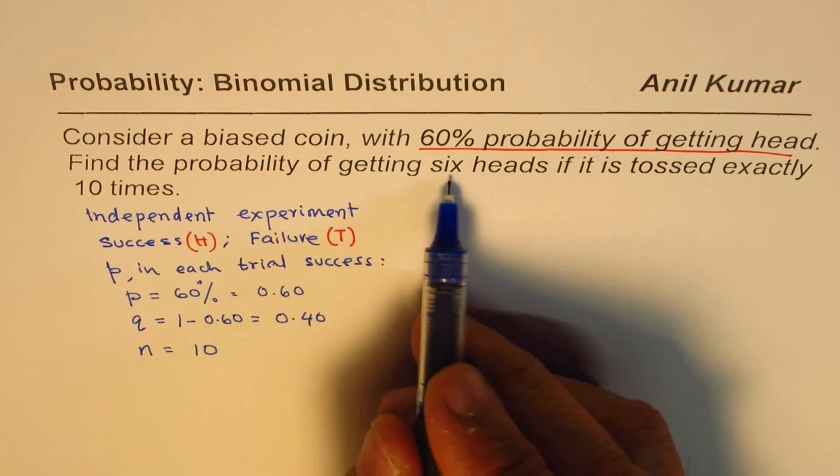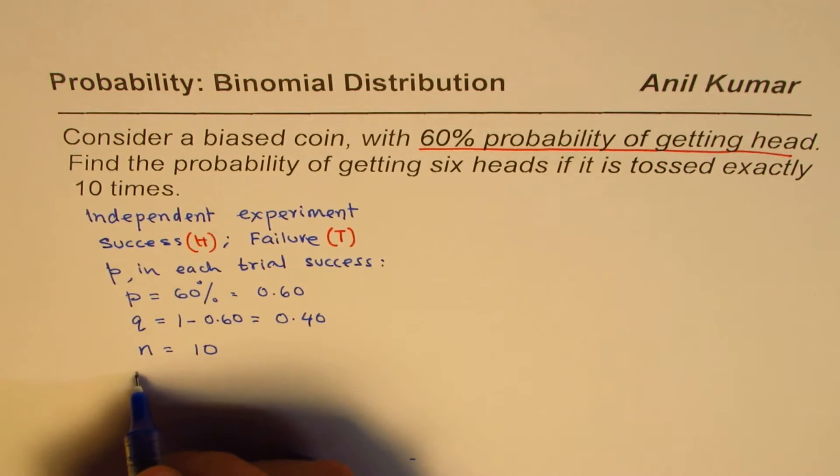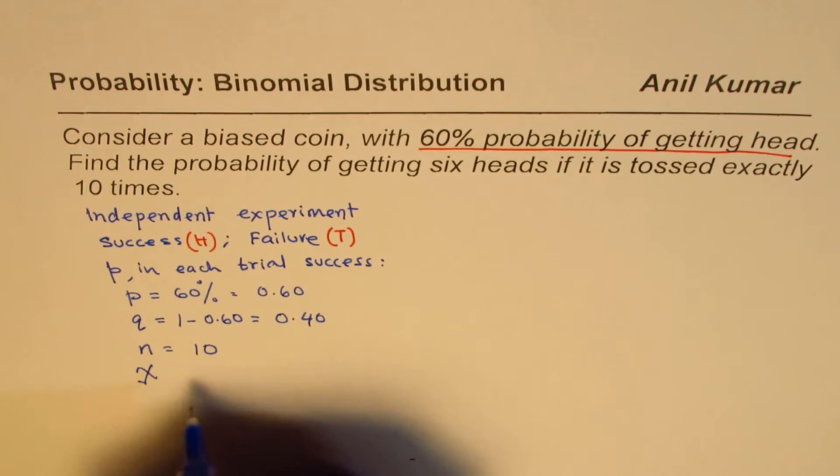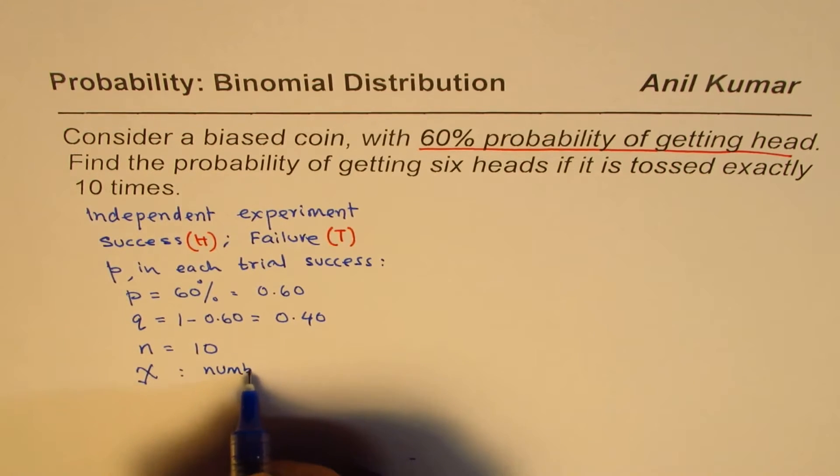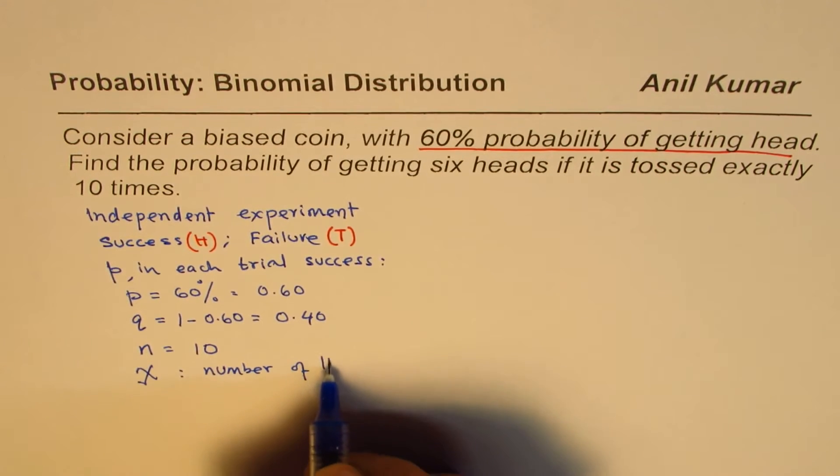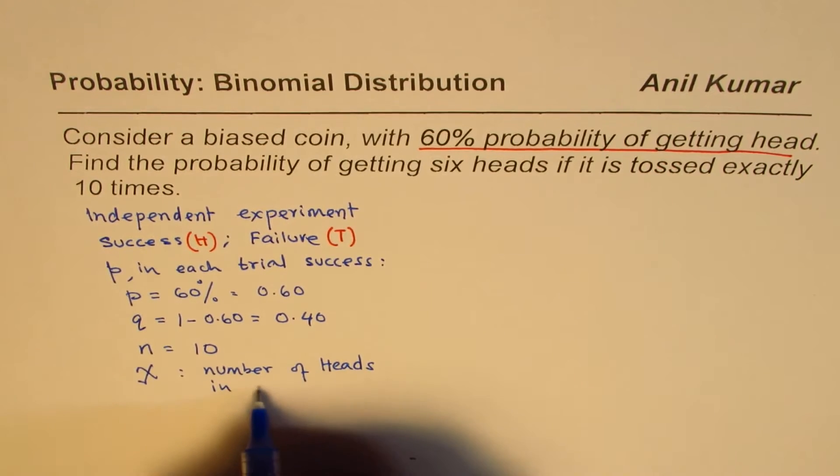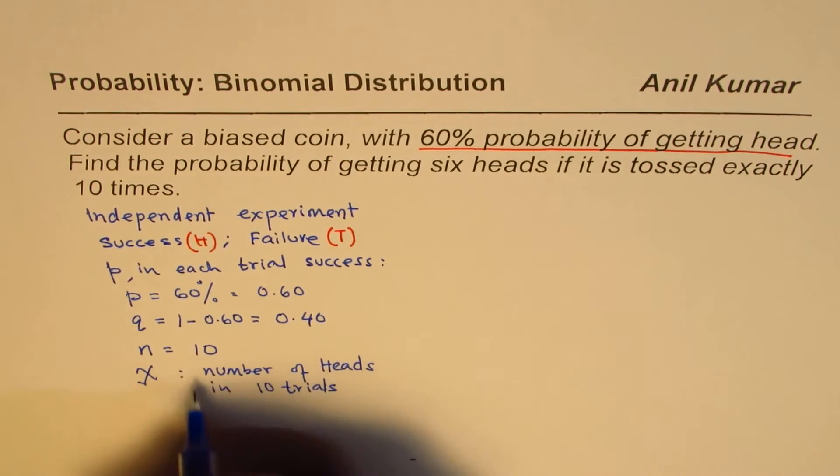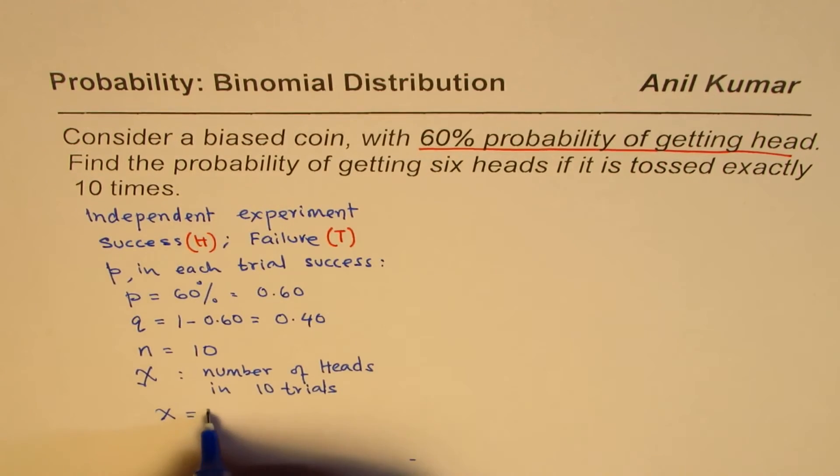And what are we expecting? 6 heads. So the random variable X will be number of heads in 10 trials, and we want this value of X equals 6. So small x is 6 for us. So all this is given to us.